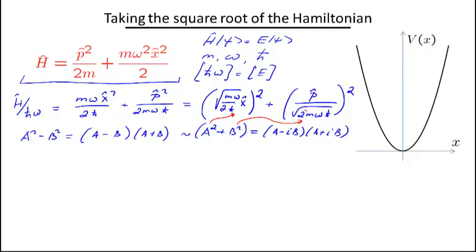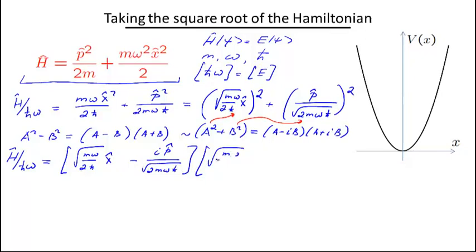And so what I'm going to write is going to be the following: I will represent my Hamiltonian divided by ℏω as √(mω/2ℏ) x minus i p/√(2mωℏ) times the same thing but with a plus sign here: √(mω/2ℏ) x plus i p/√(2mωℏ).